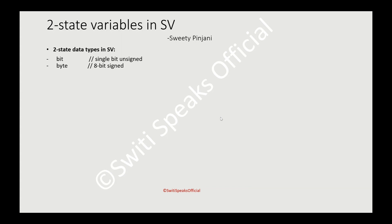The second type is 'byte'. It is an 8-bit signed variable, which means it carries negative values. So if you define a byte variable of 8 bits, it will not have values from 0 to 255 — instead it will represent values from minus 128 to 127.